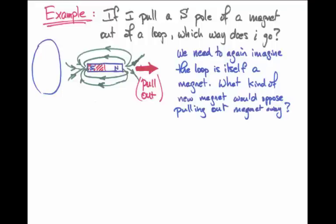So we have to picture what kind of magnet would act in such a way as to oppose the removal of that south pole.